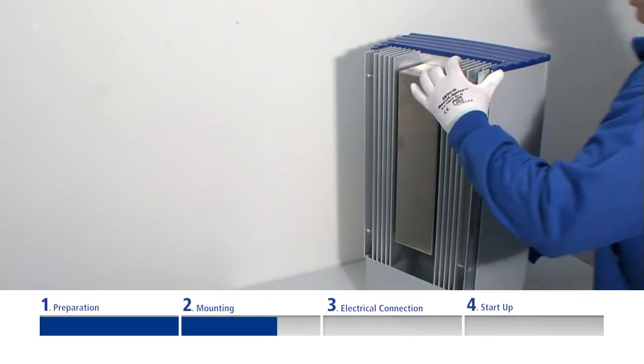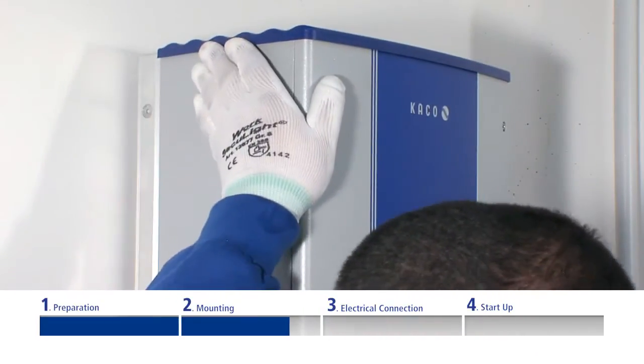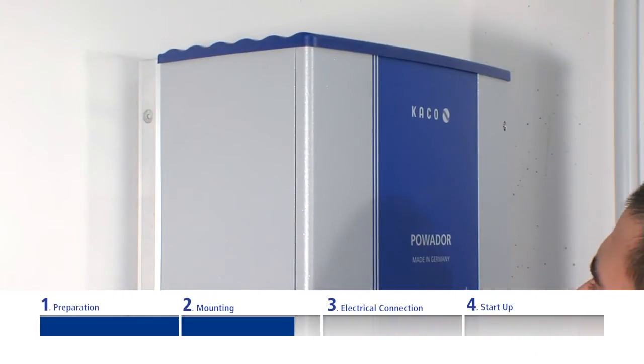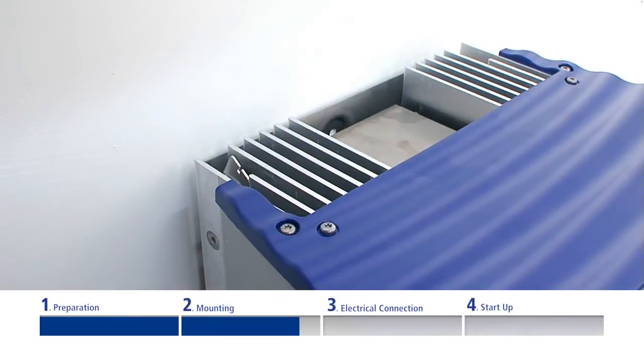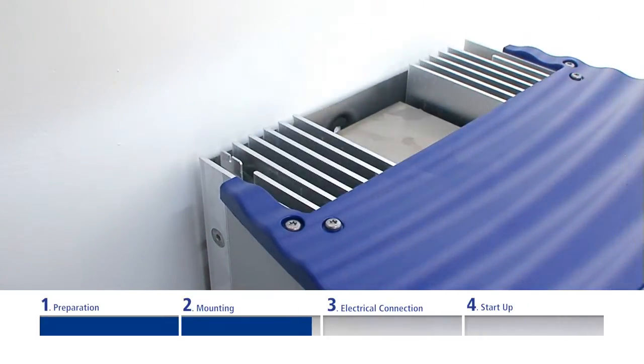Mount the inverter on the mounting bracket so that the pegs in the heat sink rest in the notches. Finally, lock the safety catch. To do this, slide the upper end of the catch towards the wall until the groove runs parallel to the wall.